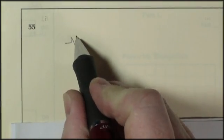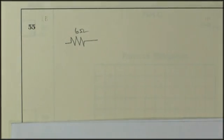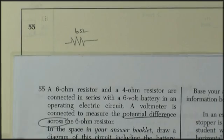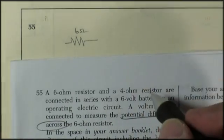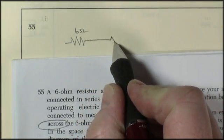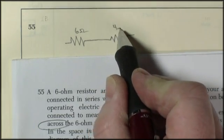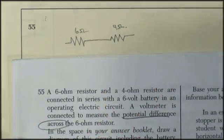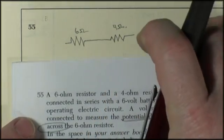So we start with the 6-ohm resistor. And then we go in series. So we're connecting in series to a 4-ohm resistor. So a straight line with no circuit options. 4 ohms. And they're connected in series with the battery.